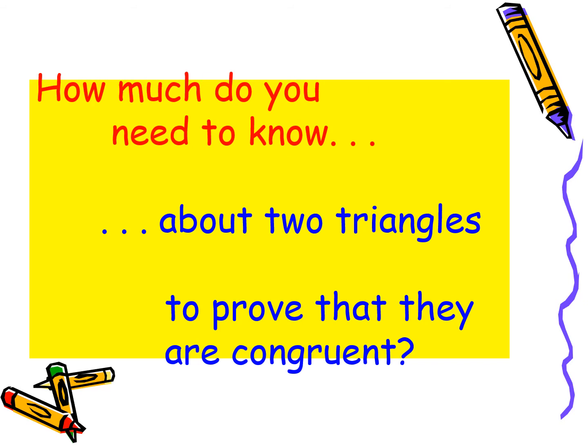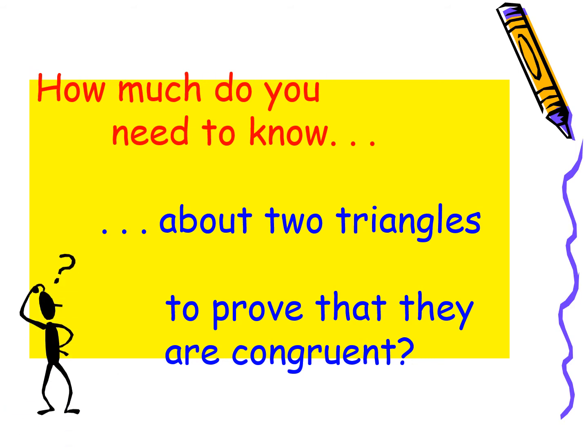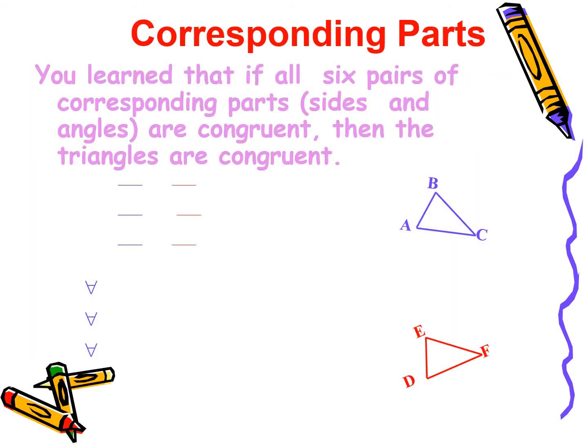How much do you need to know about two triangles? By the word itself — triangles — the shape consists of three arms. So what we have to prove is that they are congruent, meaning the three sides and three angles must be equal. Then only we can tell that two triangles are congruent. You have learned that if all six pairs of corresponding parts — that means three sides and three angles — are congruent, then the triangles are congruent.